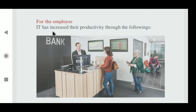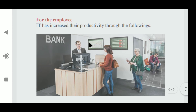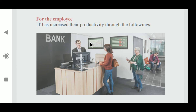Number three is for employees — IT has increased their productivity. Employees are the main assets of the organization. First, accurate computing of cumbersome and time-consuming jobs such as balancing, interest calculation, and automatic printing of covering schedules, deposit ledgers, passbooks, and pass sheets frees staff from these time-consuming jobs, enabling them to give more attention to customer needs. Third, signature retrieval facility allows verification of transfer transactions at their own terminal. Fourth, avoidance of duplication of entry due to single-point data entry.